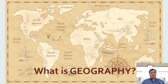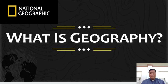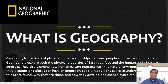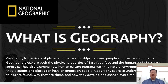One question that we ask is: what is geography? What are we studying here? The National Geographic answers it in this manner: Geography is the study of places and the relationships between people and their environments. Geographers explore both the physical properties of the Earth's surface and the human societies spread across it. They also examine how human culture interacts with the natural environment and the way that locations and places can have an impact on people. Geography seeks to understand where things are found, why they are there, and how they develop and change over time.